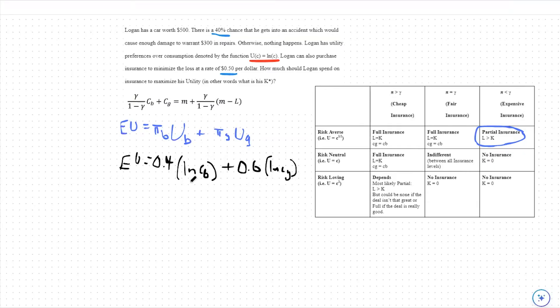Next, we can take our marginal rate of substitution of this expected utility function. Though it looks a little different than our normal utility curves, we go by the same principle, which would be to take the partial derivative with respect to the bad state, and then put it over the partial derivative with respect to the good state, treating these as two goods.